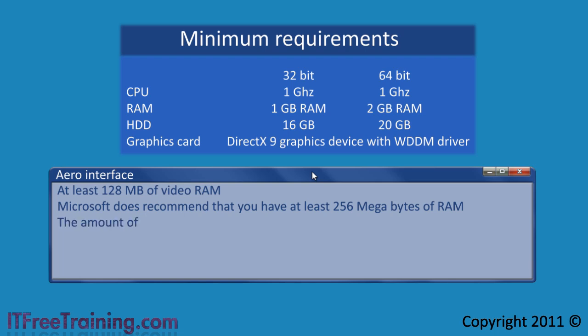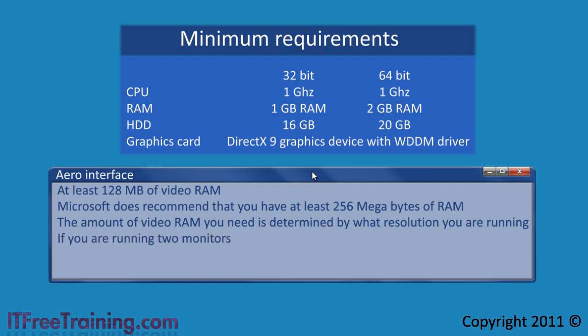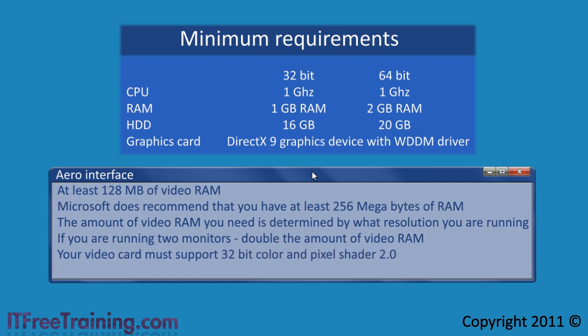In the real world, the amount of video RAM you need is determined by what resolution you are running. If you are running 2 monitors off of the one PC, you will need to double the amount of video RAM. For Aero to run, your video card must also support 32 bit color and Pixel Shader 2.0. They are currently up to Pixel Shader 5.0, with Pixel Shader 2.0 being supported since the release of DirectX 9 back in 2003, so any modern video card should support these requirements.